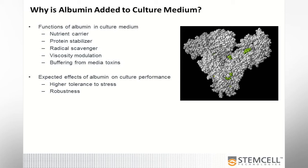Based on this, the obvious question is why is albumin added to the culture medium in the first place? There are a lot of known functions for albumin in culture medium. It's known to be a nutrient carrier, it can stabilize proteins both excreted from cells and added to the media. Radical oxygenated species are something people increasingly try to avoid, and albumin can act as a radical scavenger. It's known to affect viscosity for transport issues and can also help buffer from media toxins — as evidenced by the beta-mercaptoethanol, where the BSA is presumably soaking up the beta-mercaptoethanol and preventing it from damaging the cells. This improves tolerance to stress and increases robustness.